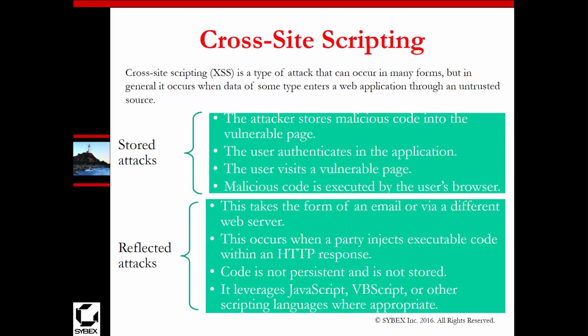Cross-site scripting is a very common type of attack that occurs in different forms. It's normally when untrusted data is sent to a web application. There are two major types: stored attacks and reflected attacks. Stored attacks involve code injected into a web page — once you load the page, you execute the code. Reflected attacks could come from an email. This occurs when a party injects executable code within the HTTP response, normally JavaScript or VBScript, but not necessarily.